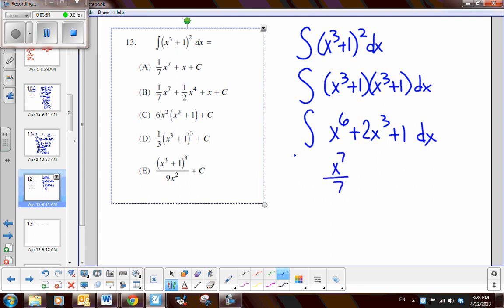So I add 1, I get x to the 7th divided by 7. Add 1, I get x to the 4th. And when I divide by 4, 2 4ths is 1 half. And this would be x plus c. Don't you love it, folks? The answer is B.